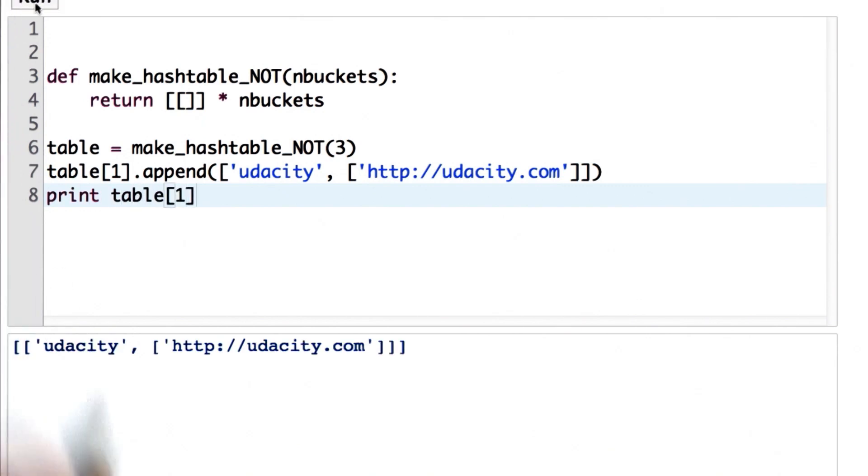And now we can print out what's in that bucket. Looks like everything is okay. What about what's in bucket zero? Now we get the same result. So think about what went wrong. I'm going to ask a quiz to see if you can understand why the simpler definition of make_hashtable doesn't actually work correctly.